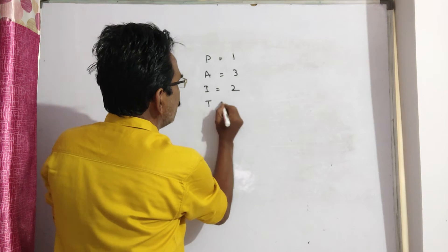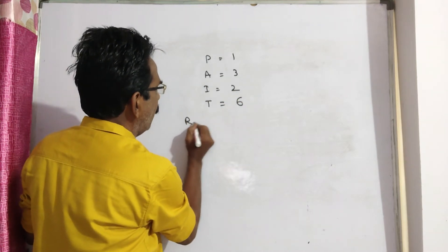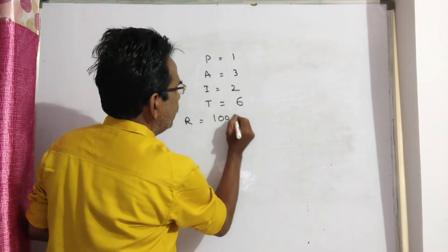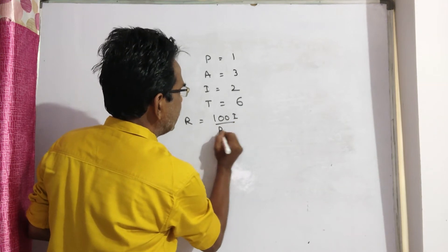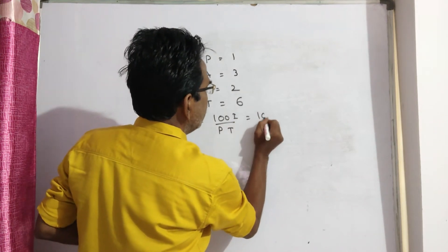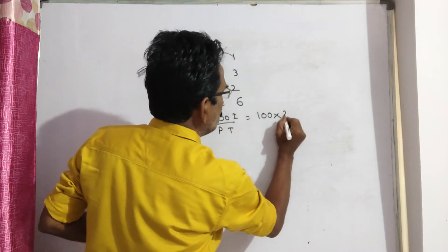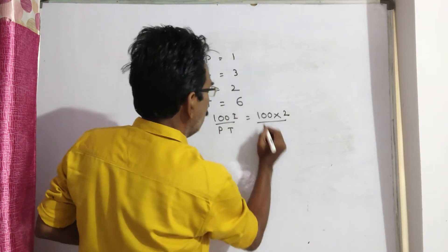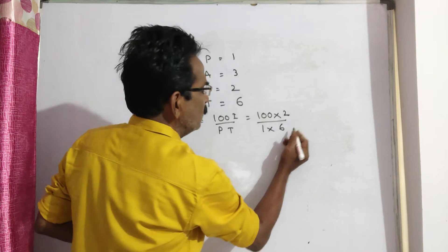Now, T is also given as 6 years. So R equals 100I divided by PT. Substituting the values: 100 into I, where I equals 2, P equals 1, and T equals 6.